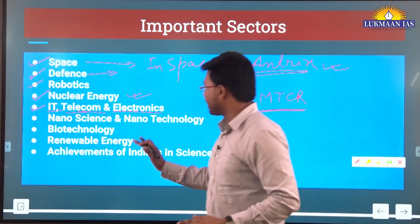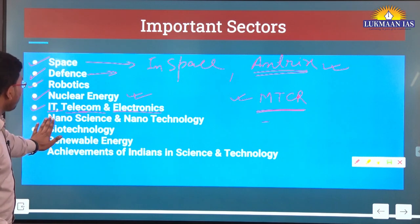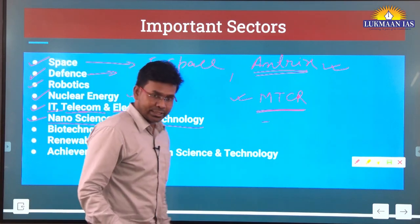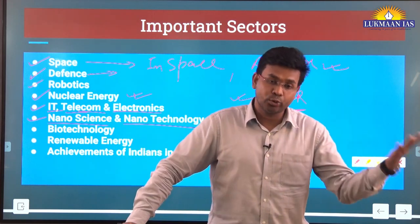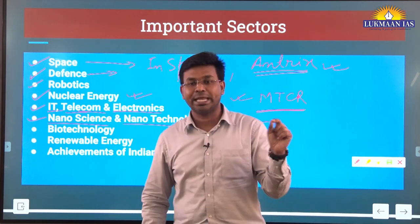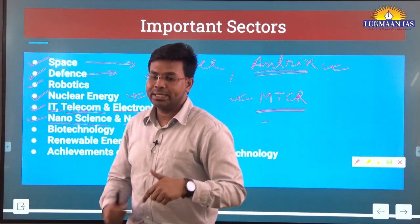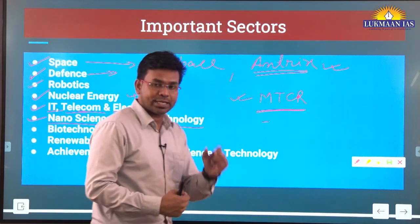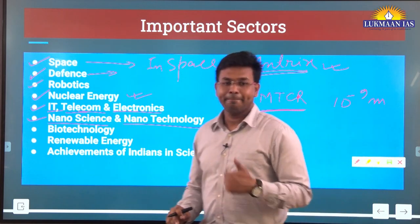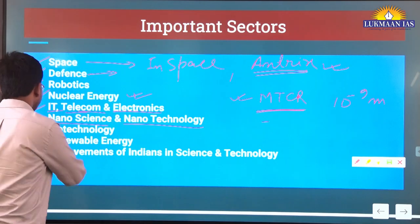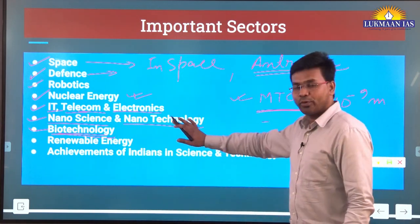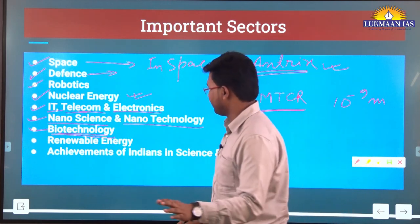Nano science and nanotechnology is also an emerging field. From basic sciences we learn about graphite, carbon, and allotropes of carbon. Carbon nanotubes are used for creating nanotechnology products of nano size — the range of 10 to the power of minus 9 meters, i.e., nanometers. Biotechnology is also a key area — because of COVID-19 we have learned a lot more about this field.